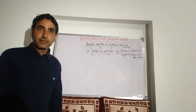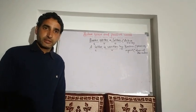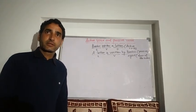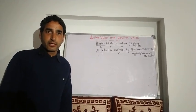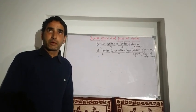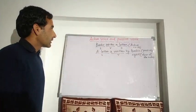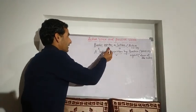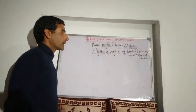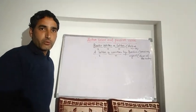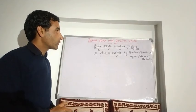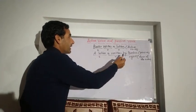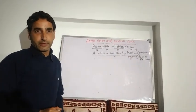Assalamu alaikum dear students. In the previous lecture we talked about voice and its kinds — active voice and passive voice — then we learned the general rules governing the formation of passive voice. Now let's learn something more about this topic. For example, 'Bashir writes a letter': here Bashir is subject, writes is verb in present simple, a letter is object, and this sentence is in active voice. In passive voice: 'A letter is written by Bashir,' where a letter is subject, is written is verb, and Bashir is the agent or doer of the action.